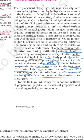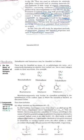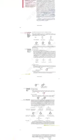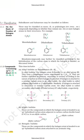In this lesson we are covering preparation, physical properties, chemical properties, and uses of organometallic compounds. Now, the classification of haloalkanes and haloarenes: the first classification is based on the number of halogens. If a haloalkane has only one halogen, we call it a monohaloalkane. In case of two halogens, we call it a dihaloalkane, and in case of three halogens, a trihaloalkane.